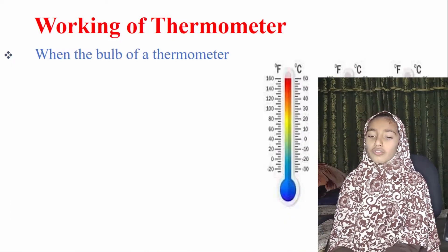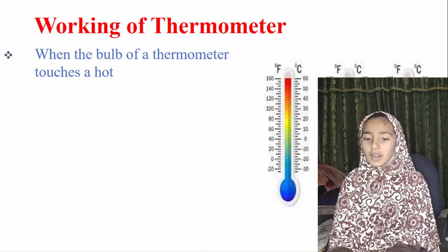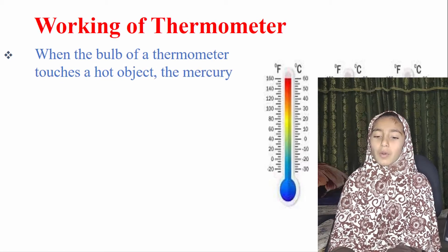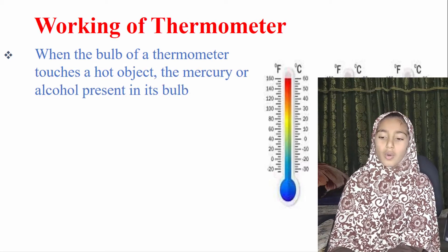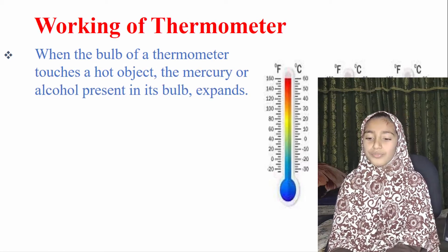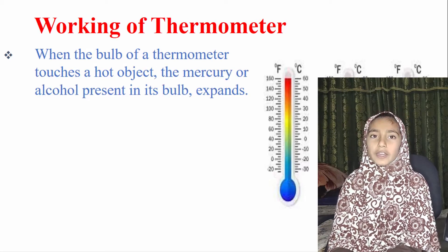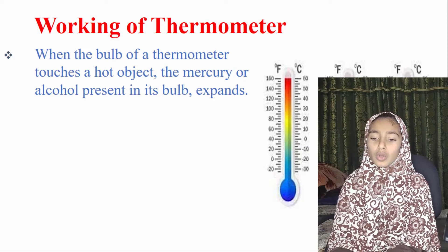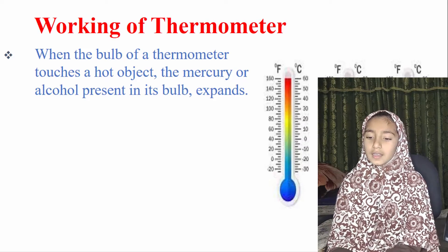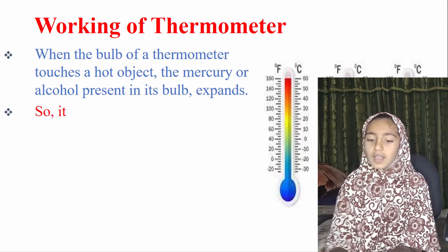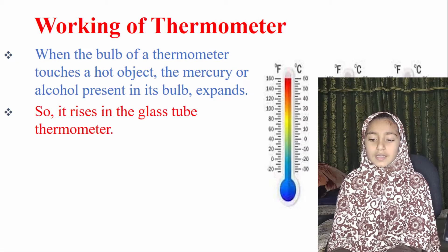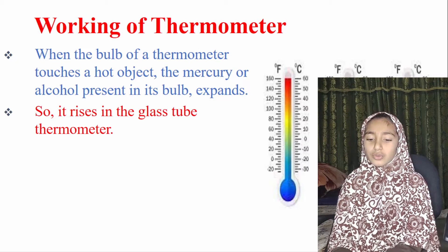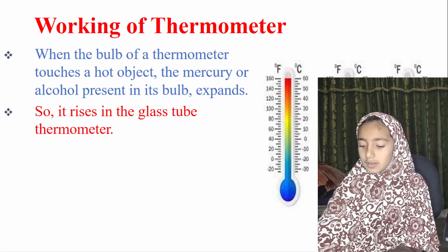Working of thermometer: When the bulb of a thermometer touches a hot object, the mercury or alcohol present in its bulb expands, so it rises in the glass tube of the thermometer.